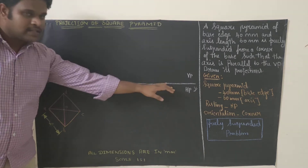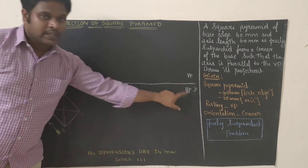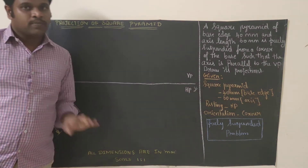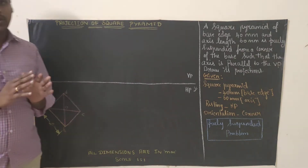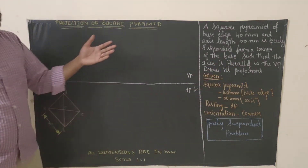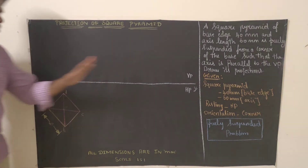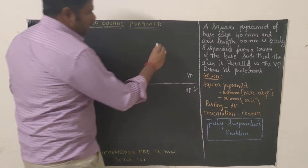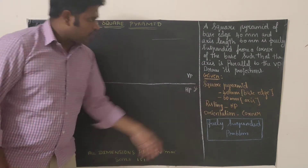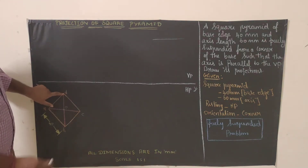The first step is to draw a reference line — draw the XY line and label VP and HP. The reference line is drawn with your 2H pencil; XY, VP, HP labels should be written with your HB pencil. Next, we draw the base diagram in HP. Since the corner orientation was chosen — the second diagram — draw the square inclined at 45°.